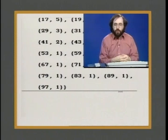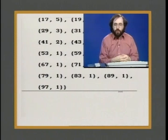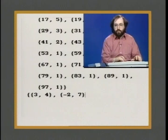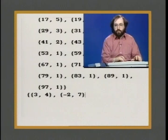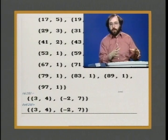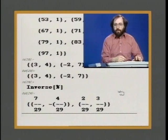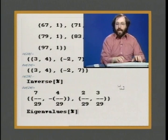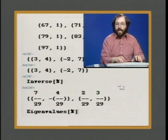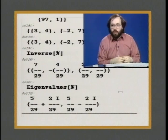A final thing to talk about in terms of numerical computation is dealing with vectors and matrices. We can type in a matrix in Mathematica — let's say the matrix {3, 4, -2, 7}. A matrix in Mathematica is represented as a list of lists, where the curly brackets show where the lists begin and end. We can ask for the inverse of the matrix, and Mathematica will give us an exact result in terms of rational numbers. We could also ask Mathematica to show us the eigenvalues of this matrix, which it'll give us involving complex numbers.